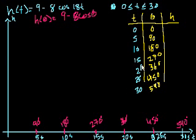It's not rocket science here. When t equals 15 seconds, 15 times 18, we're trying to find the cosine of 270 degrees. I'm just doing this because I don't have a calculator, and this will help me pick good points.